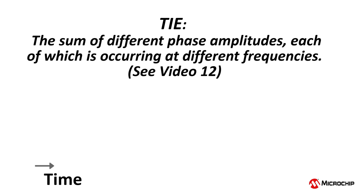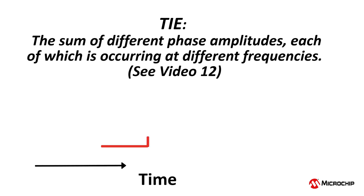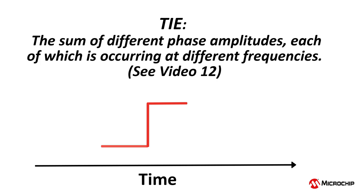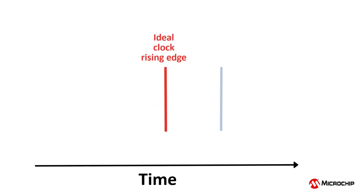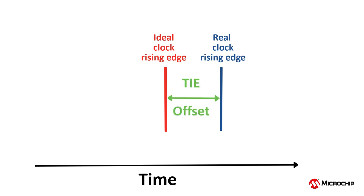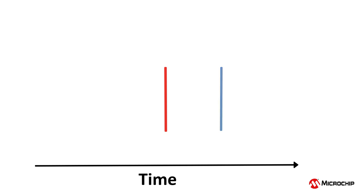In previous videos, I described time interval errors, or TIE, of a real clock as the sum of different phase amplitudes, each of which is occurring at a different frequency. I am going to animate real clock edges, shown in blue, occurring at slight offsets from the ideal clock rising edge, shown in red, adding these real edges that occur at different frequencies one at a time. For a review of this concept, please see video number 12 in this series, which is entitled Time Interval Error.